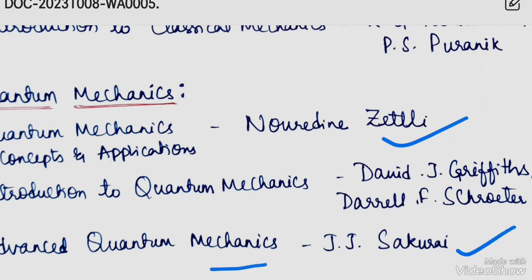Among these, the easiest and most complete book for Quantum Mechanics is the Zettili book, making it the most important book for Quantum Mechanics preparation.